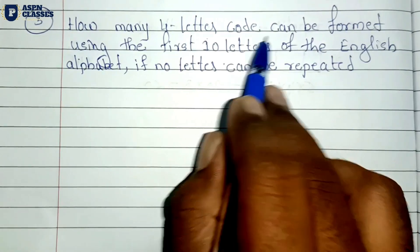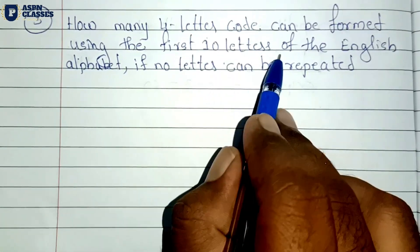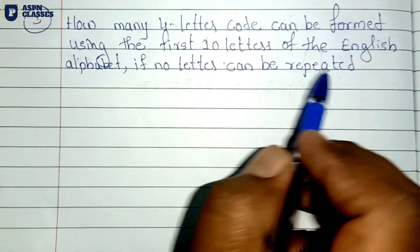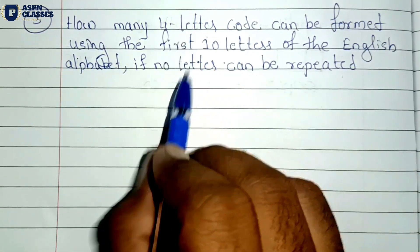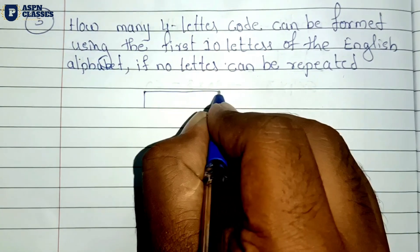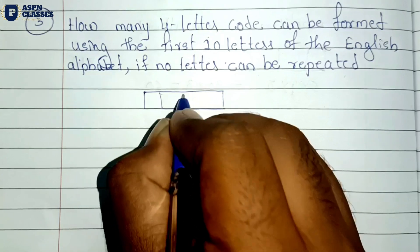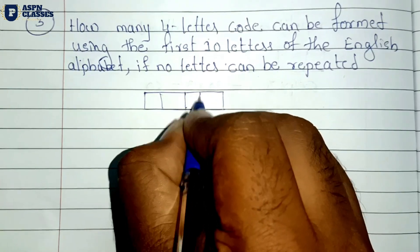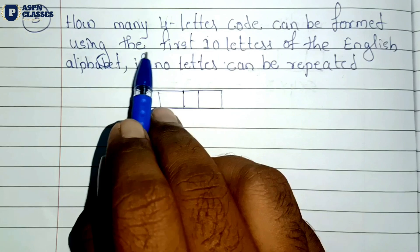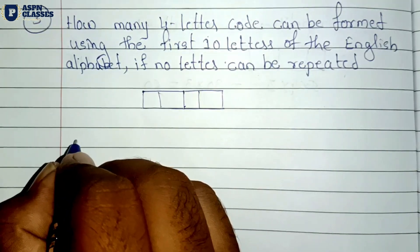How many 4-digit codes can be formed using the first 10 letters of the English alphabet, if no letter can be repeated? This means we use 4 letters from 10, with no repetition.